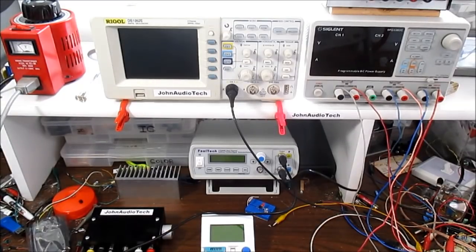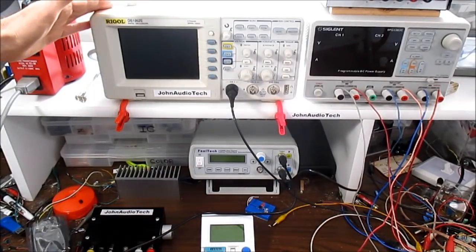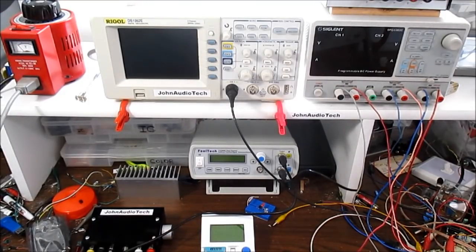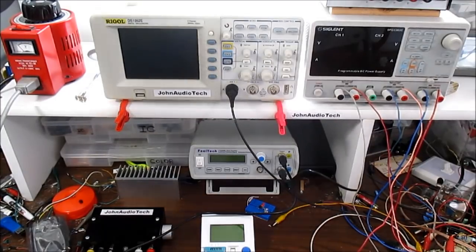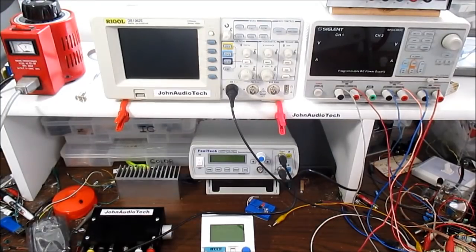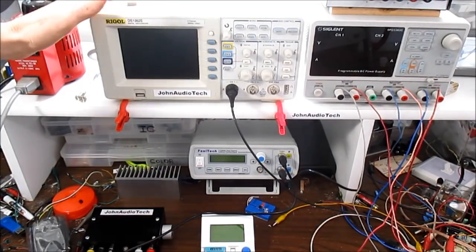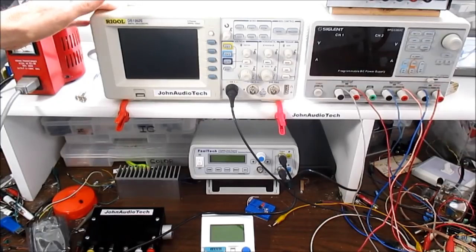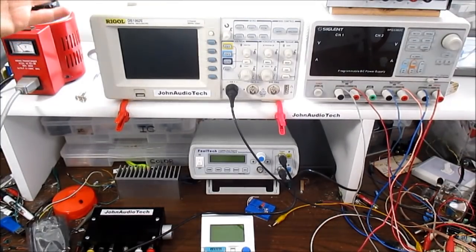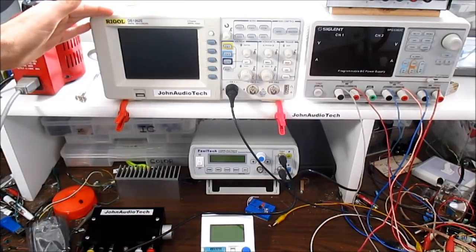If you do purchase an oscilloscope, I would go with a brand that has a presence in your country if you have to send it in for advanced calibration or some type of service. For example, this Rigol scope here, Siglent, Tektronix or Keysight, they're going to have service depots in the United States where I'm at. So if I had any of those brands, I could send them in and have them serviced.